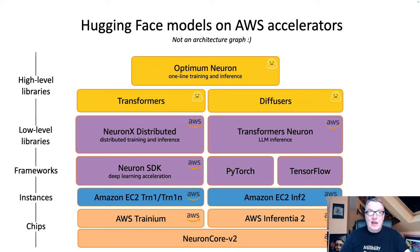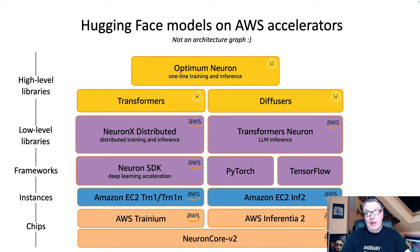That's the stack we covered in the previous video, so if you haven't watched that, please take a look — I'll put the link in the video description. In this particular video, we're going to focus on distributed training. So first, we should dive into NeuronX Distributed, which is a distributed training and inference library built by AWS.